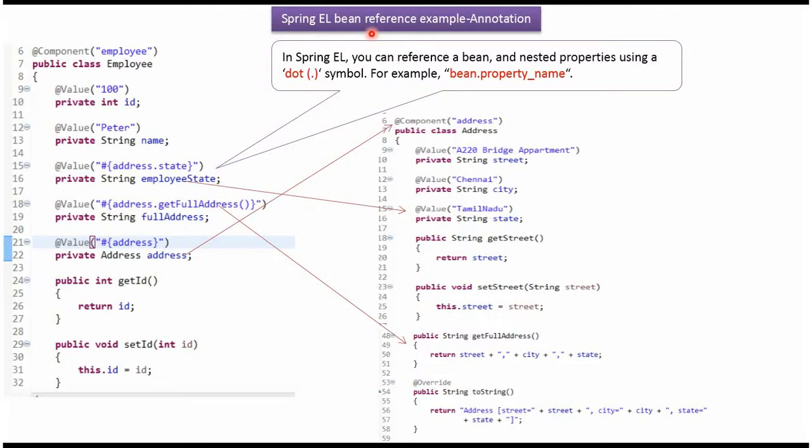This video tutorial covers Spring Expression Language Bean Reference Example using Annotation. Using Spring Expression Language, we can reference a bean and its nested properties using a dot symbol. For example, Bean.PropertyName.